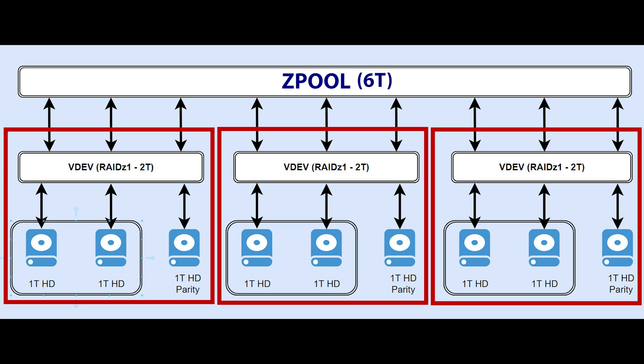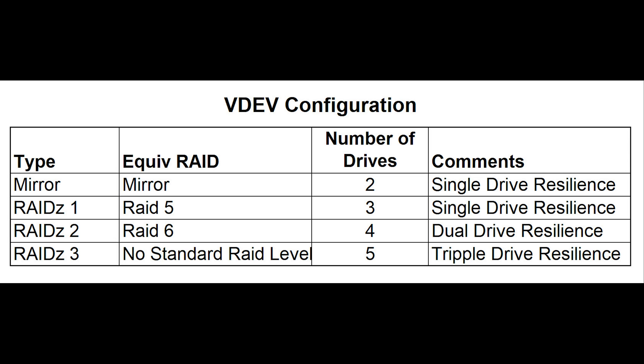The VDAV is the actual drive configuration — in other words, the array level of the array. To better understand the VDAV options, let's look at the minimum number of drives and compare it to a typical NAS RAID configuration.